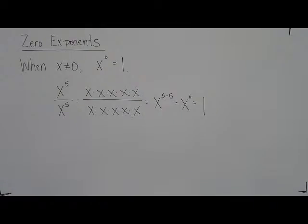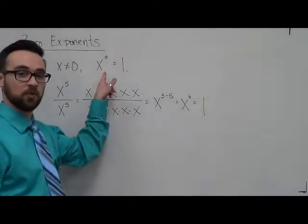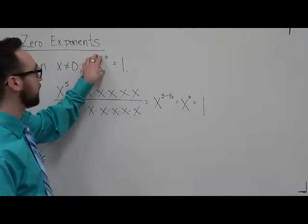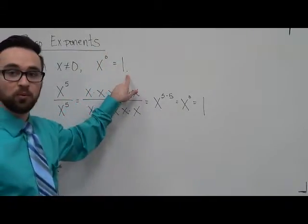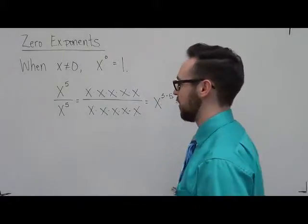So, zero exponents. It doesn't count when this number is zero. For anything other than zero, anything to the zero power is always going to be one. Now, why does that happen that way?